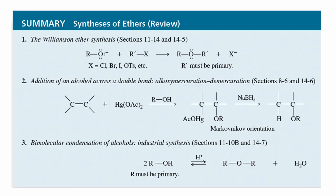These are all reactions we've seen before — we're just looking at them from the perspective of ethers, putting them together in one place to show the different ways to synthesize ethers. The first is the Williamson ether synthesis. The second is alkoxymercuration-demercuration. The third is bimolecular condensation of alcohols. So there are two ways to synthesize ethers from an alcohol starting material — Williamson or bimolecular condensation — and one way starting from an alkene.